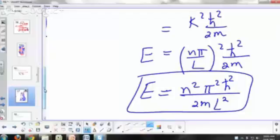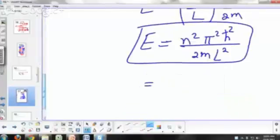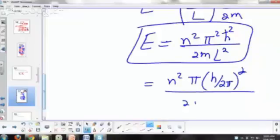All right. So let me rewrite this into an expression that you'll most likely find in your book. A more popular way of writing this expression is to rewrite this as n squared pi squared. What's h bar? It's h over 2 pi. So that's h over 2 pi squared divided by 2 times the mass times L squared.